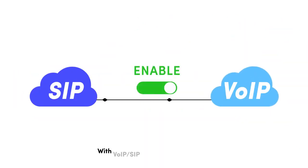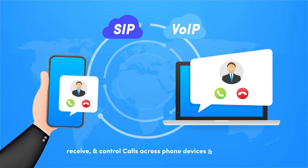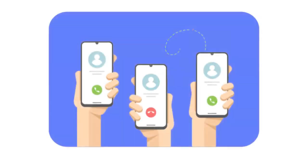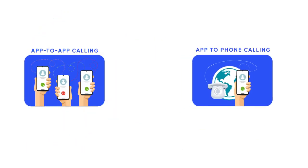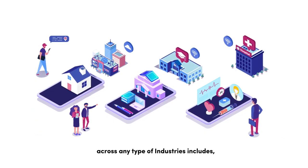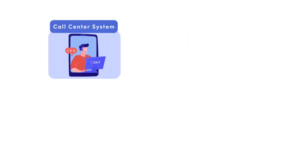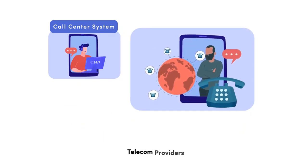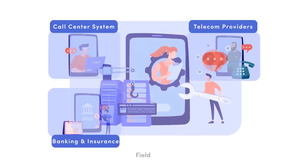With VoIP and SIP together, you can make and receive control calls across phone devices and platforms, such as app-to-app calling and app-to-phone calling. You can connect and control VoIP-SIP calls across any type of industry, including call center systems, telecom providers, banking, insurance, and field service.